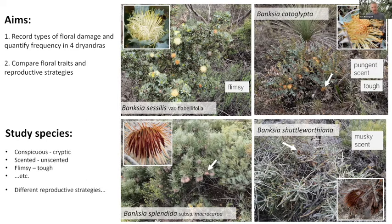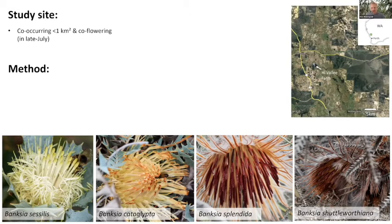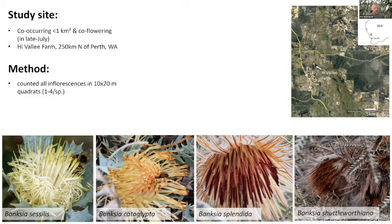Importantly, all of these species occur in a small area and their flowering overlaps in late July. The map shows the location of my study site, which was at Hilvali Farm, a private floral reserve about 250 kilometers north of Perth. My method consisted of counting all inflorescences for these species in quadrats of 10 by 20 meters, and then scoring the damaged inflorescences towards the end of the flowering season for each species.